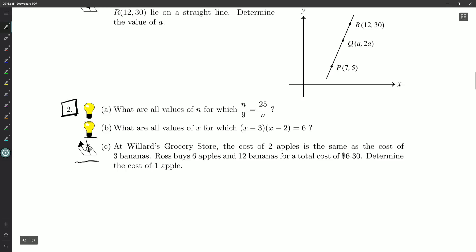So part A, what are all values of n for which n over 9 is equal to 25 over n? All right, simple fraction equation, so n over 9, 25 over n. I'm just going to cross multiply.